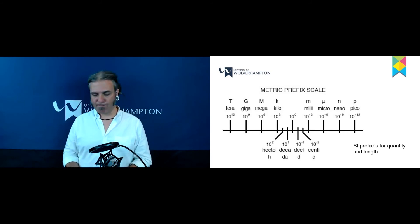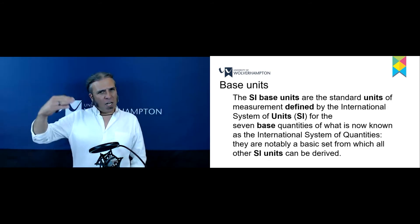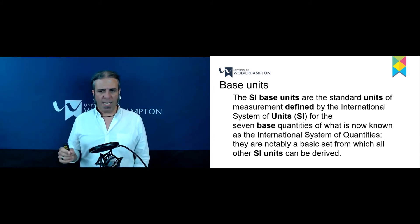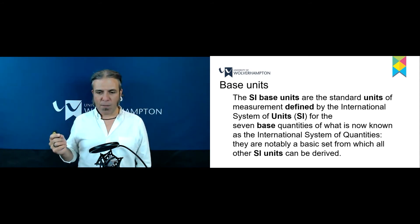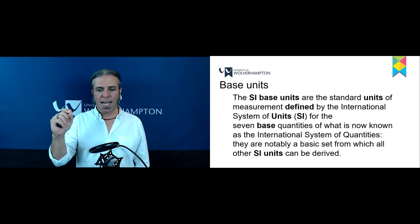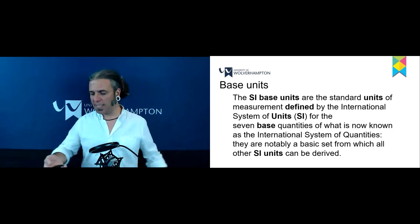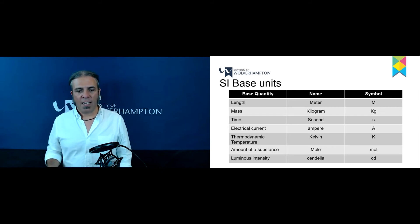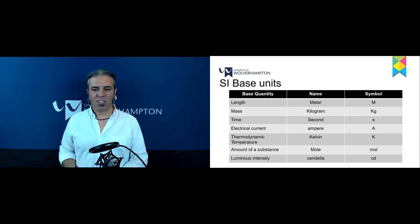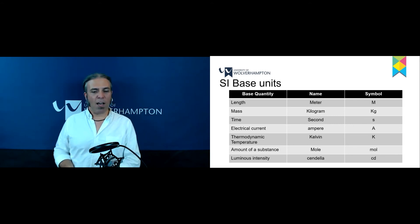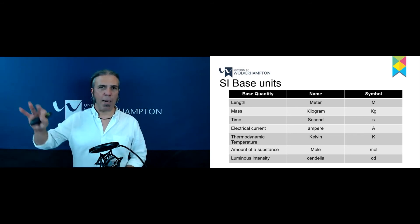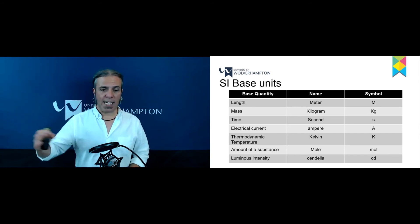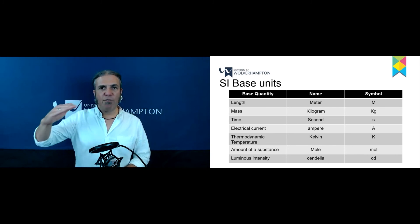Those are the SI prefixes. When we talk about base units, these are the things that everything else is derived from — standard units of measurement defined by the international system of units, which is what SI stands for. There are seven base quantities, and this table shows them: the metre, kilogram, second, ampere for electrical current, kelvin for thermodynamic temperature, mole for amount of substance, and candela for luminous intensity. Sometimes these can be denoted by Greek letters.